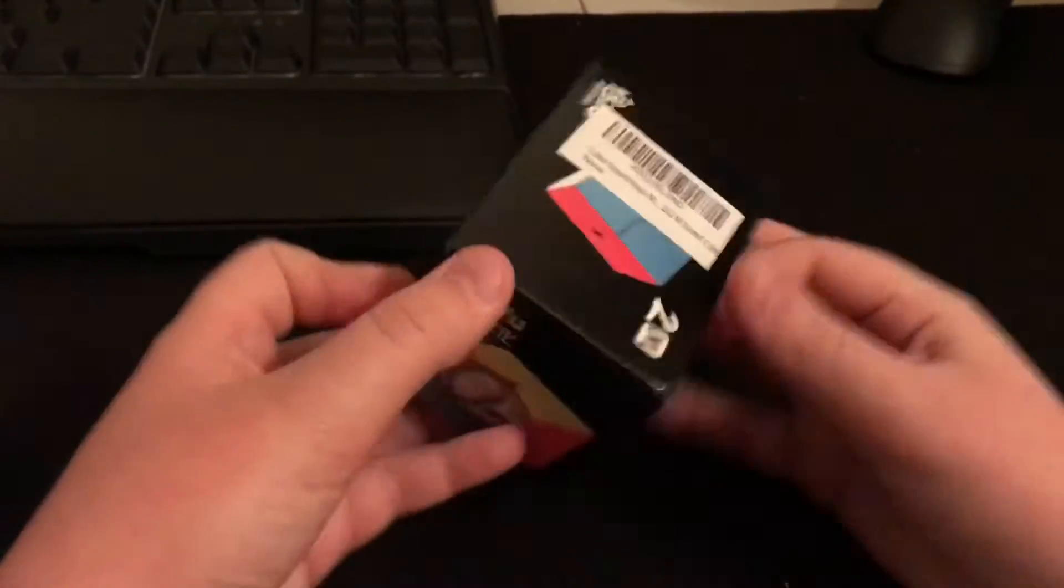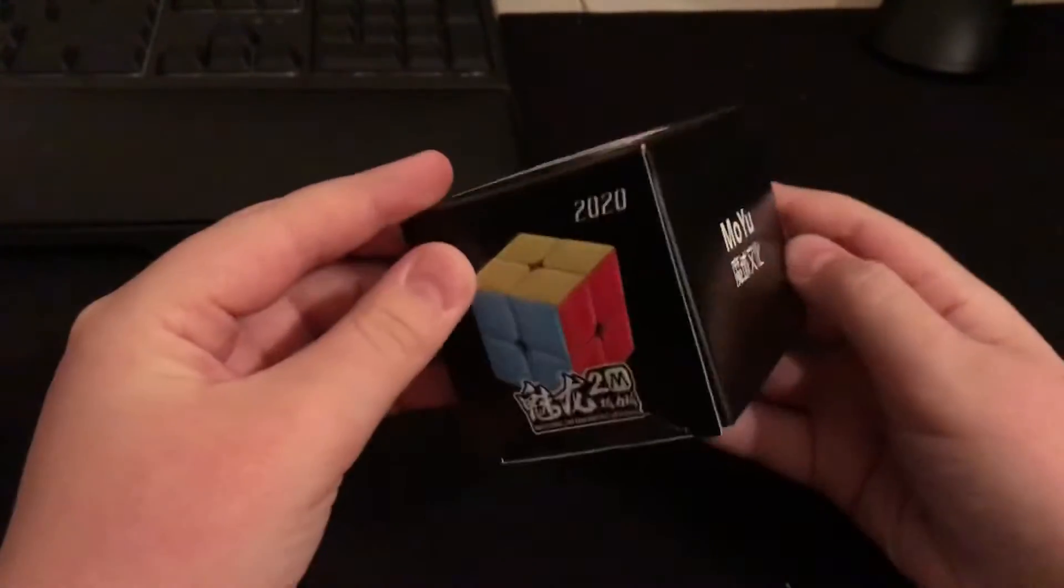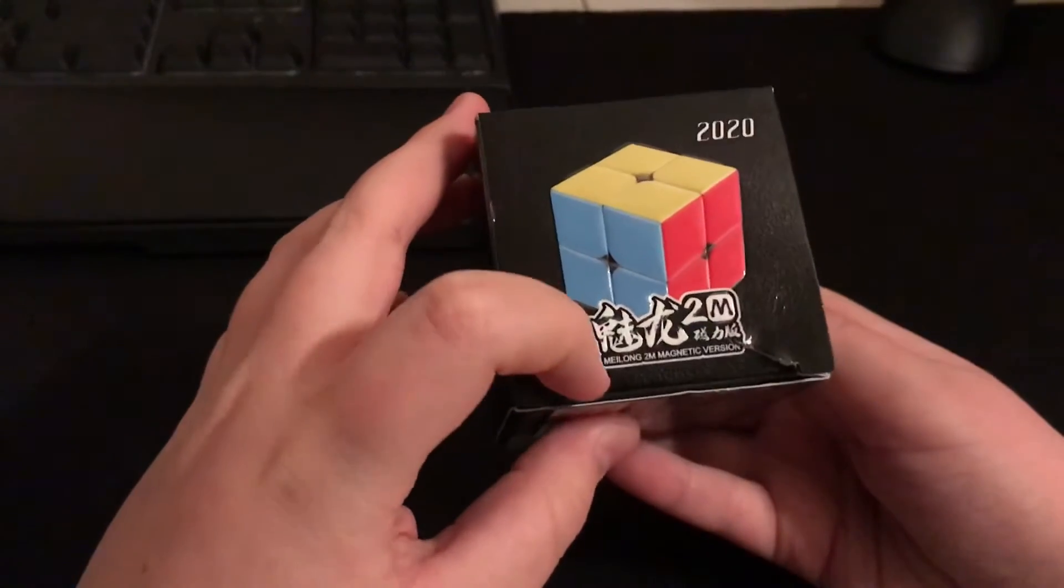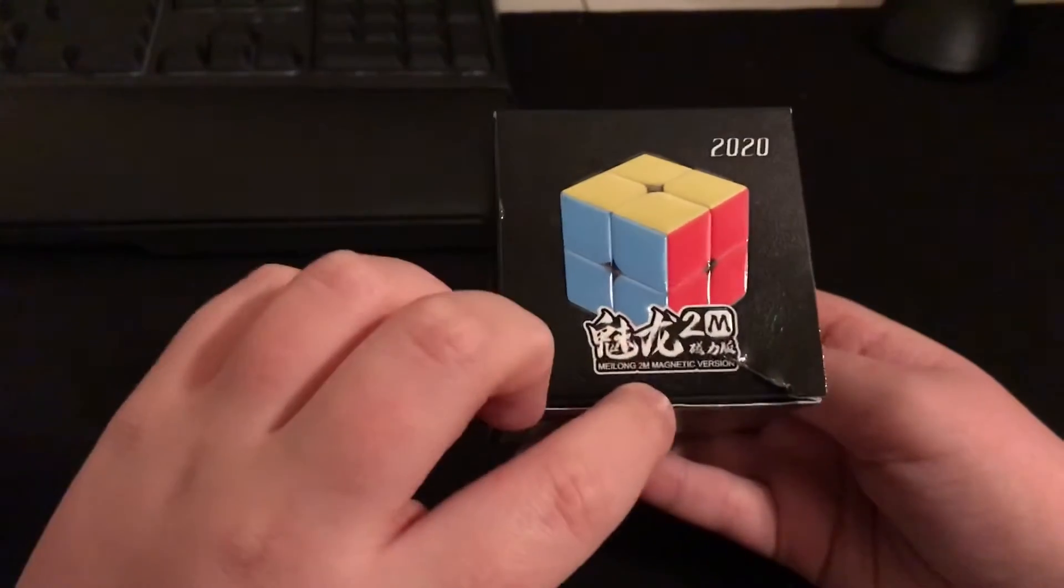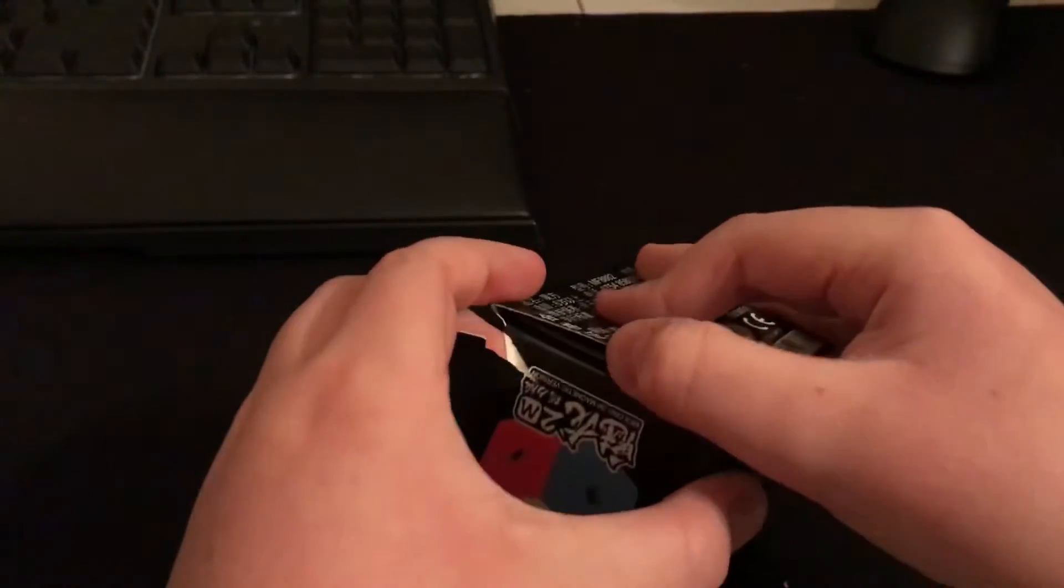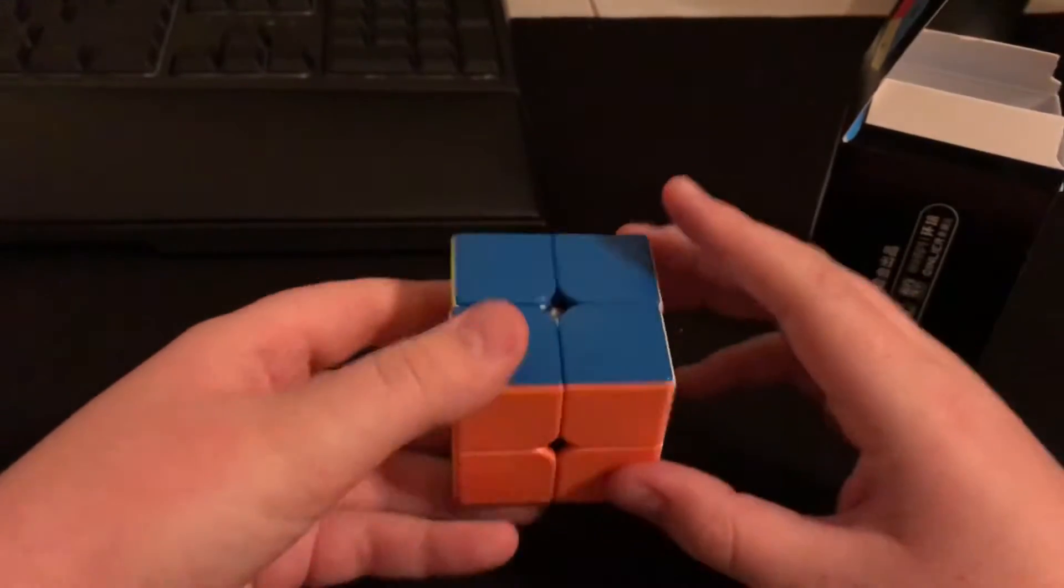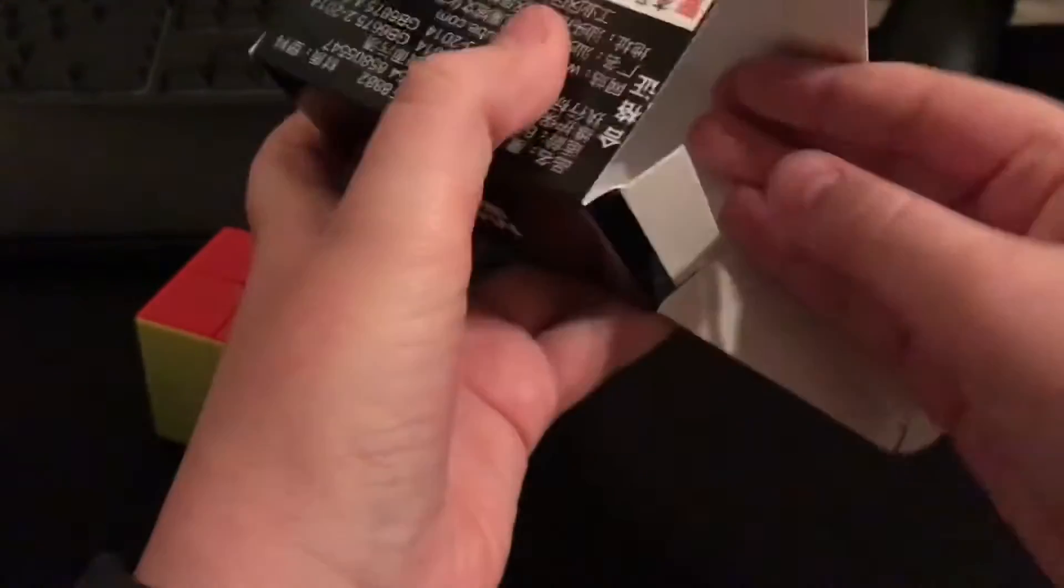This is the Meilong 2, the two by two magnetic version 2020, so it's a Moyu Meilong. Let's go ahead and open it. Here's the two by two. Again, like the other box, this is the exact same thing—we have the stand and the cube.